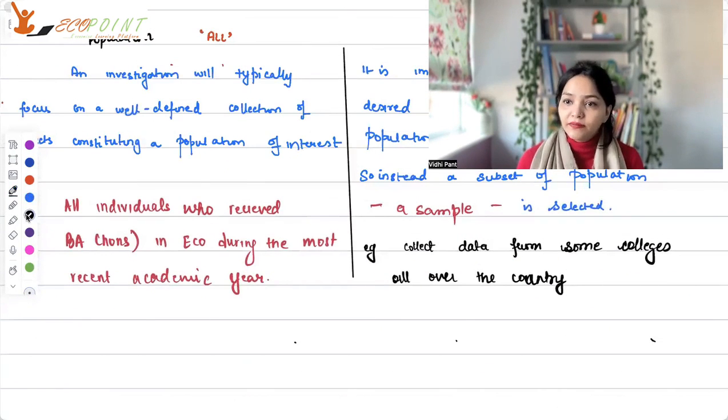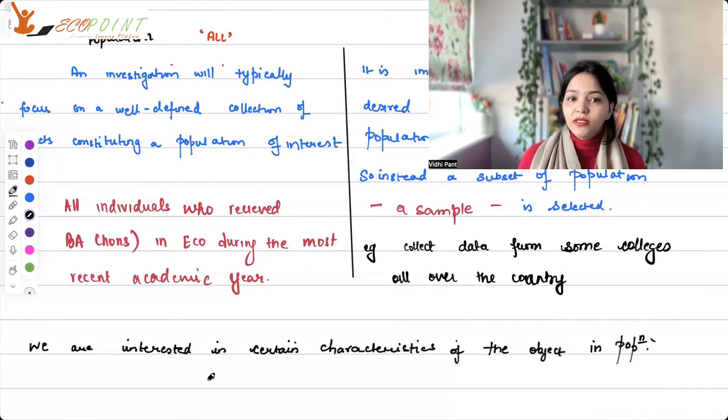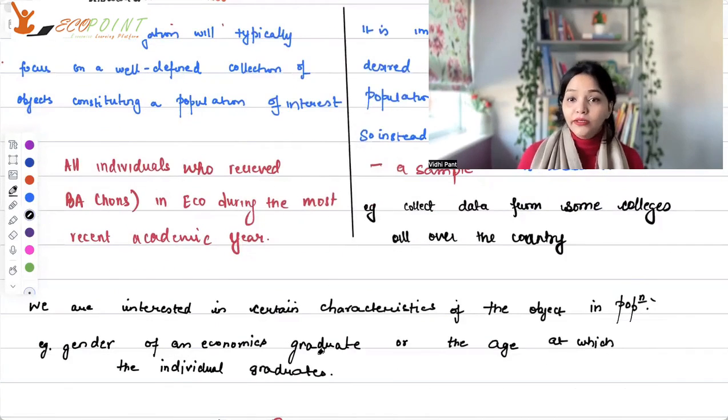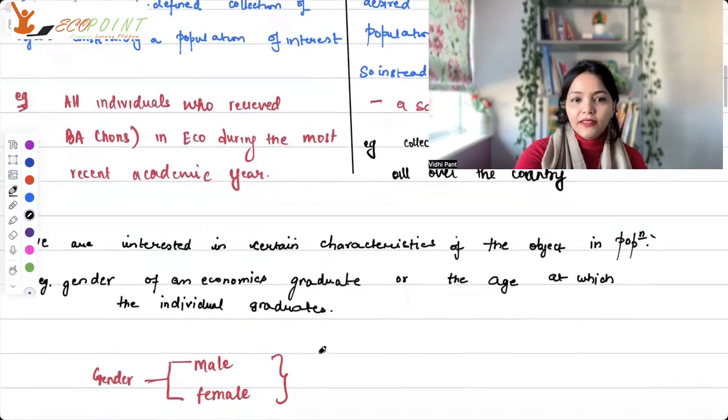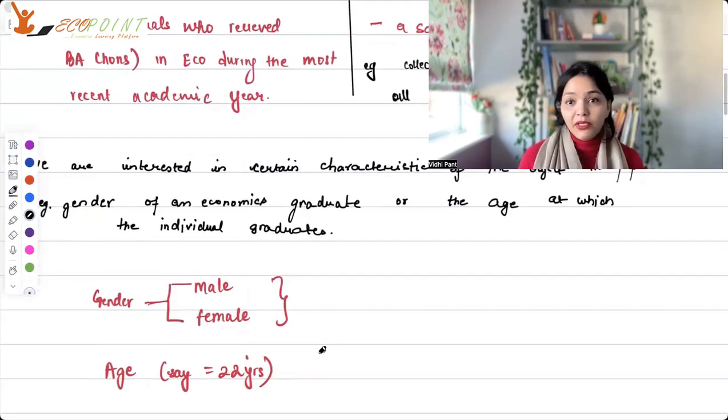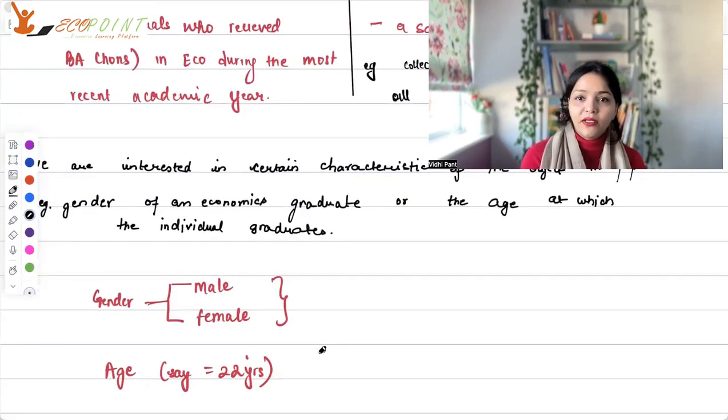Now, why are we collecting this data? We're collecting this data because usually we're interested in certain characteristics of the object in population. For example, you might be interested in the gender of the economic honors graduate, or the age at which the individual graduates.